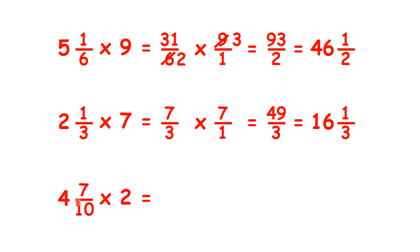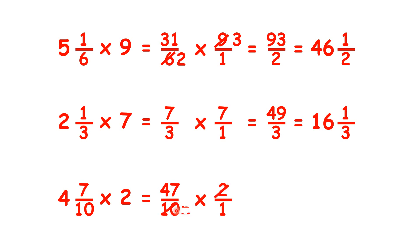Finally, four and seven-tenths as an improper fraction is forty-seven-tenths, and we're multiplying by two, so two over one. We can cross-simplify here because ten and two are both in the two times table. So now we can multiply, we get forty-seven over five, so as a mixed number, that's nine and two-fifths.